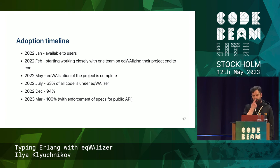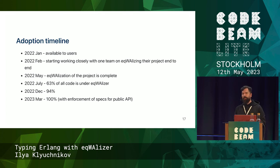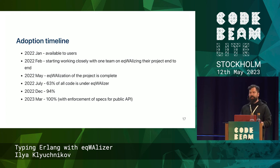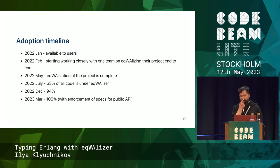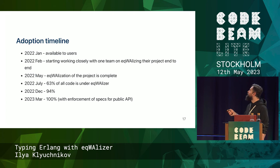A timeline with more detail: last January, internal Eqwalizer was available to our users. We started working closely with one team in WhatsApp to get them fully onto Eqwalizer end to end — that equalization was complete by May. Then we saw signs of grassroots adoption. By July last year, 63% of our code base was under Eqwalizer. By December, 94%. Then it took three more months to cover the last 6%. We now have everything type-checked with enforced specs on all public API — all exported functions.